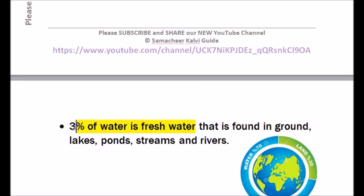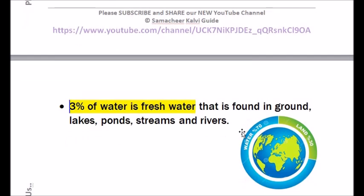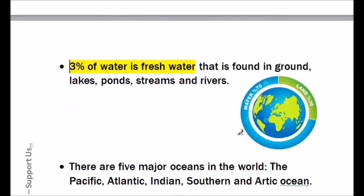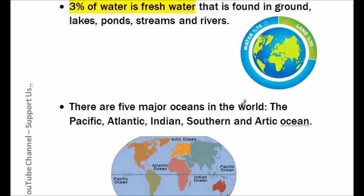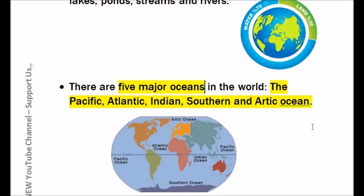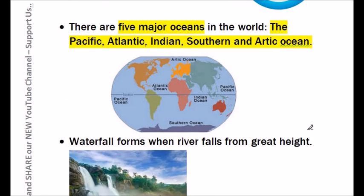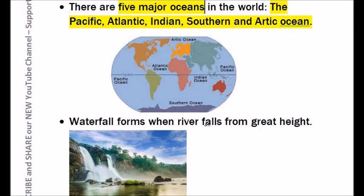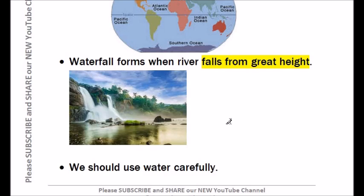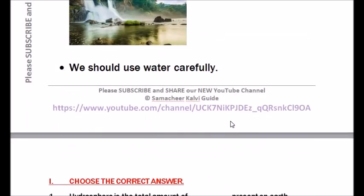Fresh water is found in the ground, lakes, ponds, streams and rivers. There are five major oceans in the world: the Pacific, the Atlantic, the Indian, the Southern and the Arctic Ocean. A waterfall forms when a river falls from a great height. We must be very careful when we use water.